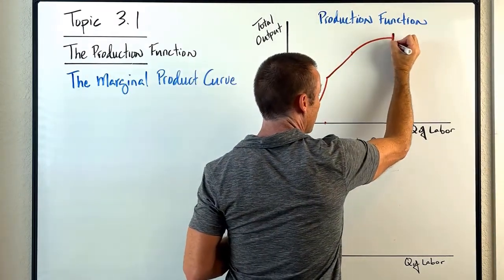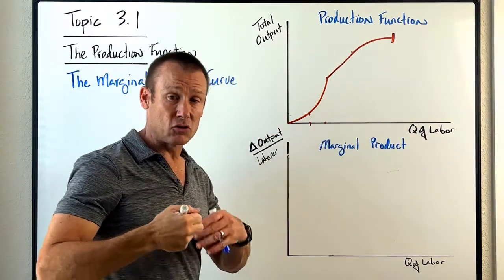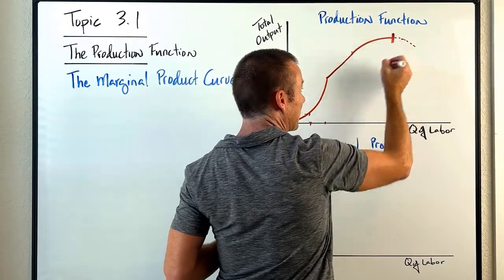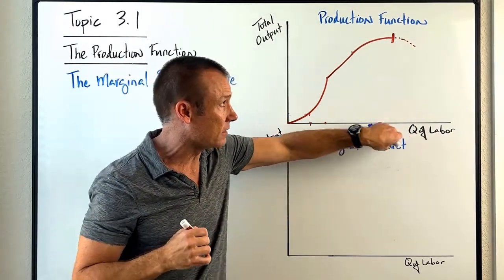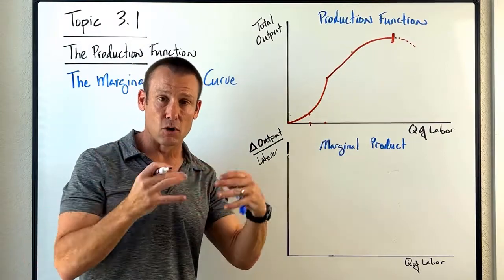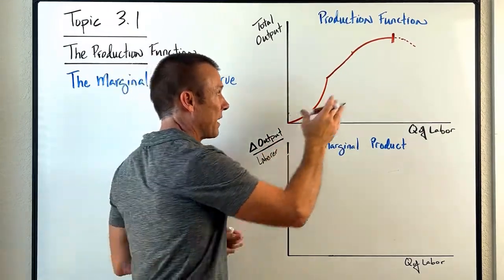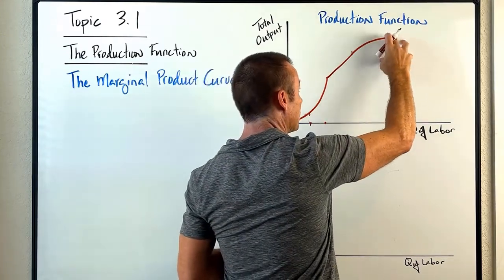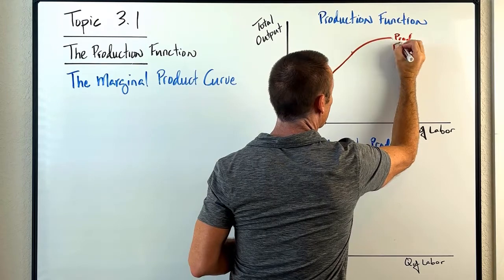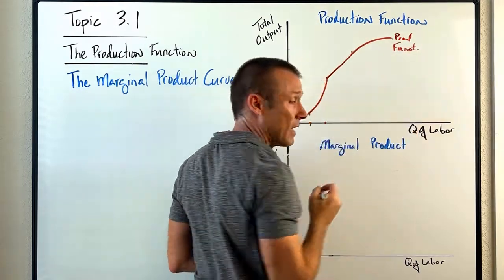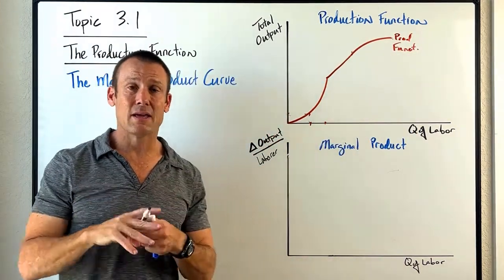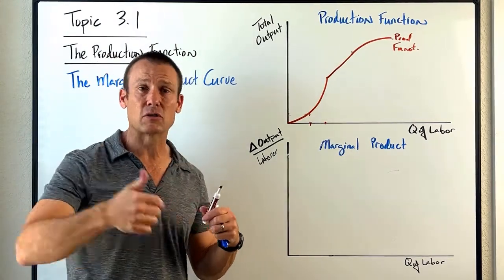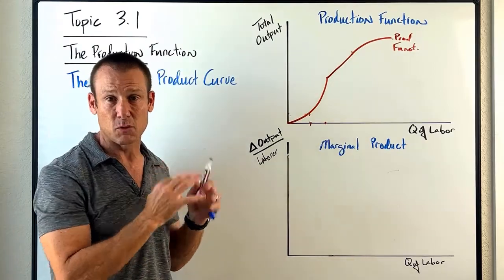I'll put a little mark right there — yes, you could even get negative marginal returns, but you should never hire a laborer where you get negative marginal returns, so I just make a dash to show it. That curve right there is our production function. So now we know how to draw it. It embraces what we did in video one: increasing marginal returns, constant marginal returns, decreasing marginal returns — that's what that function is supposed to be showing.